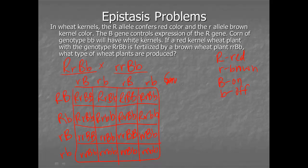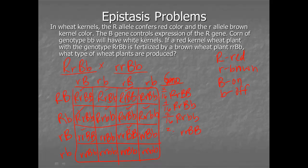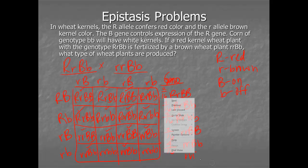We count up our genotypes. I have: big R, little r, big B, little b — two of those; big R, little r, big B, little b — four of those; big R, little r, little b, little b — two of those; little r, little r, big B, big B — two; little r, little r, big B, little b — four; and little r, little r, little b, little b — two. Be very careful when you count up the genotypes.